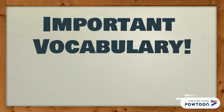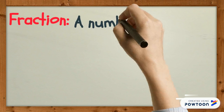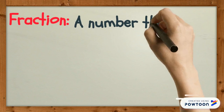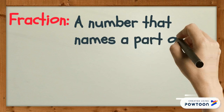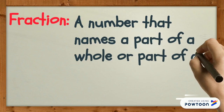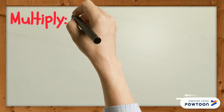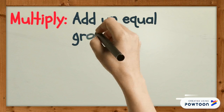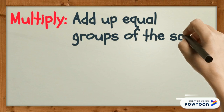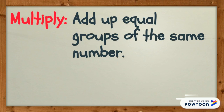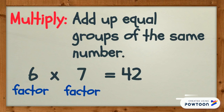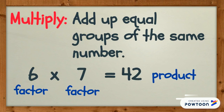Before we begin, let's review some important vocabulary. A fraction is a number that names a part of a whole or a part of a group. Multiply means to add up equal groups of the same number. The numbers you multiply are called the factors, and the answer is called the product.